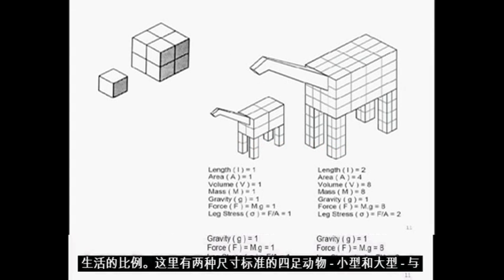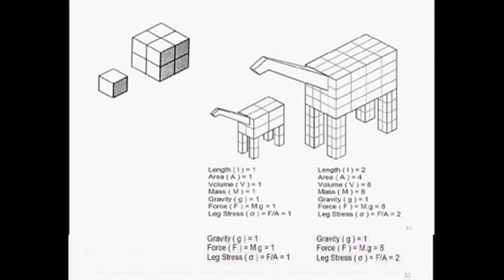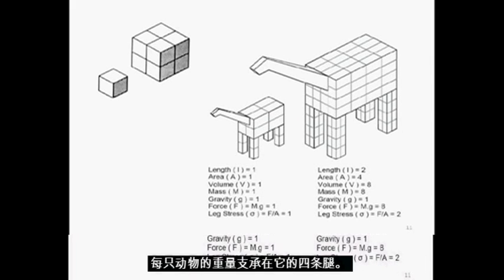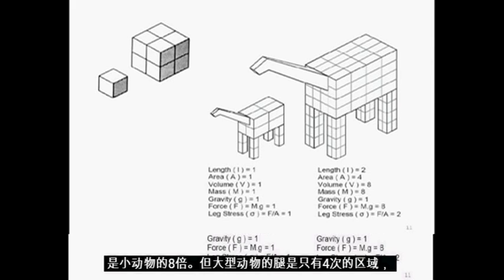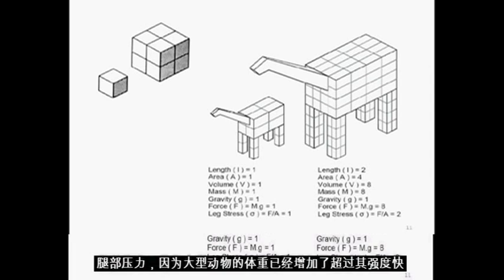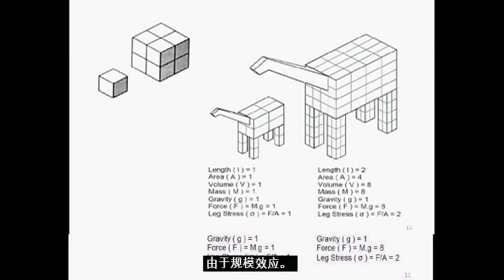Here is a standard four-legged animal in two sizes — small and large — with the weight of each animal supported on its four legs. Just like the simple box, the linear dimensions — height, width, and breadth — of the large-scale animal are twice those of the small animal. The volume and weight of the large animal is 8 times the small animal, but the legs of the large animal are only 4 times the area and strength of the small animal. The large animal's leg stress is twice the small animal's leg stress, because the weight of the large animal has increased quicker than its strength due to the scale effect.